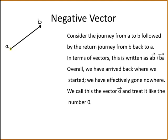If you were to travel from point A to B and then back from B to A, in terms of vectors this is written as AB plus BA. But overall you end up back at point A where you started from, so effectively you've gone nowhere.